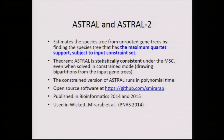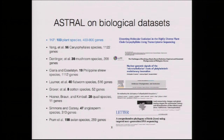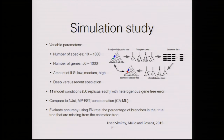ASTRAL is polynomial time and statistically consistent, and is available as open-source software. The algorithm is based upon finding a globally optimal solution to the species tree that maximizes quartet support subject to a constraint set — it computes a constraint set of bipartitions and finds the best tree within that constraint set. It's being used on many different data sets, not just the ones we're working on, but many across the country and around the world.